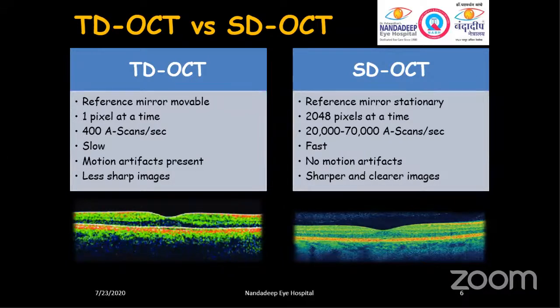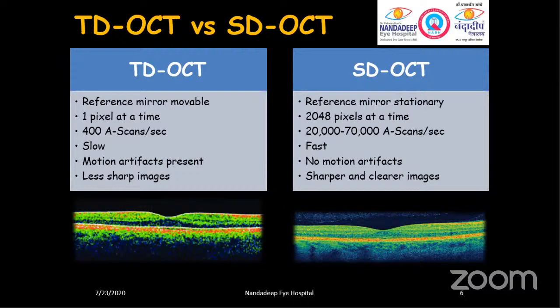In this picture you can easily see that the Fourier domain OCT is much clearer and sharper compared to the time domain OCT, which shows a lot of noise. If there was a small lesion, it would be difficult for the time domain OCT to capture it. Also, since the reference mirror was mobile, it was only able to capture a single image at a single time, making it a very time-bound test.